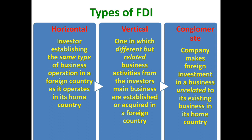There are three types of foreign direct investment: horizontal FDI, vertical FDI, and conglomerate FDI. If the investor establishes the same type of business operation in the foreign country as he operates in the home country, it is known as horizontal foreign direct investment. On the other hand, if the foreign investor starts an activity which is different but related to the business activities in the home country, it is known as vertical FDI. If the company makes a foreign investment in a business which is unrelated to the existing business in the home country, it is known as conglomerate FDI.